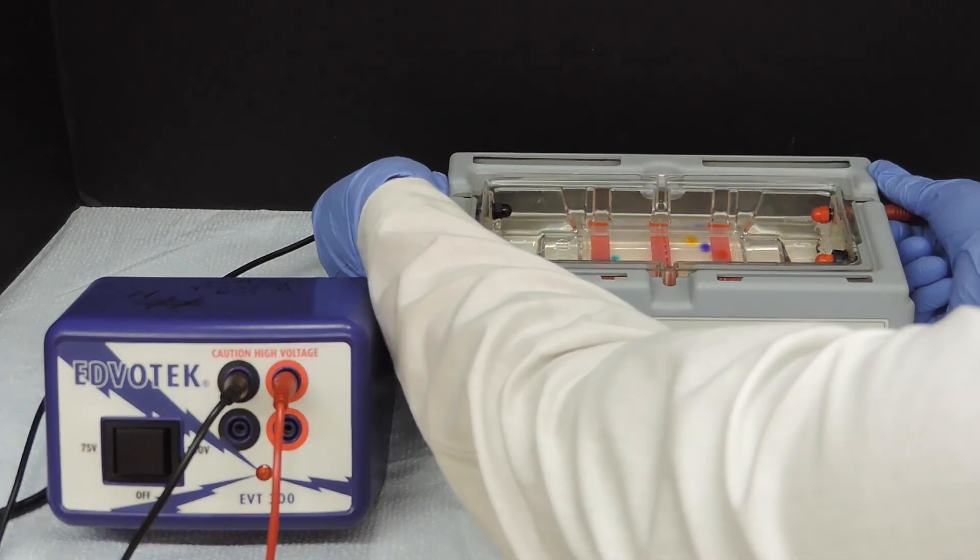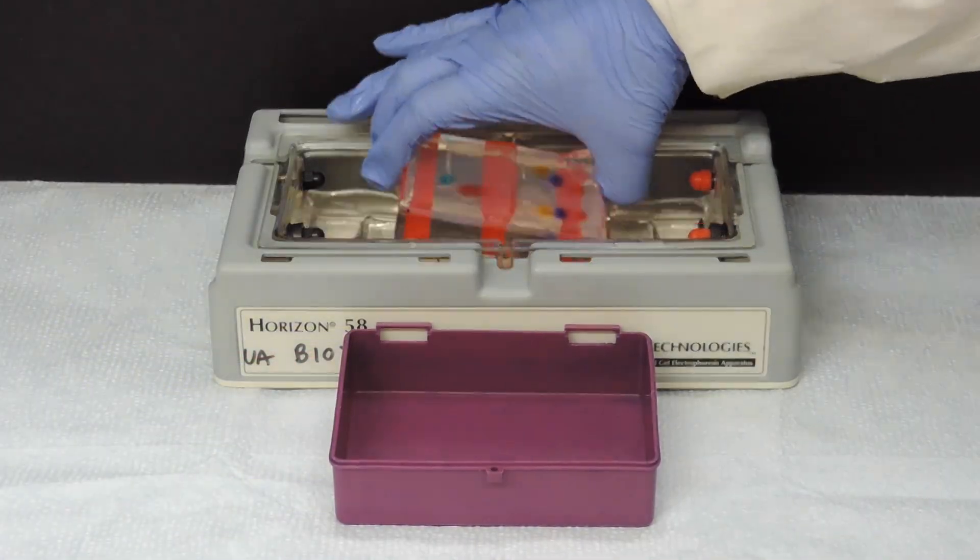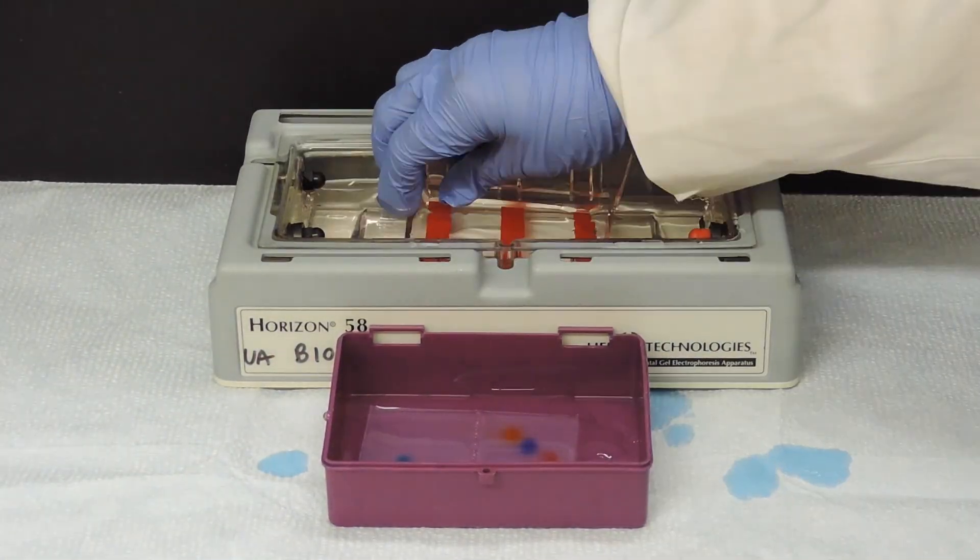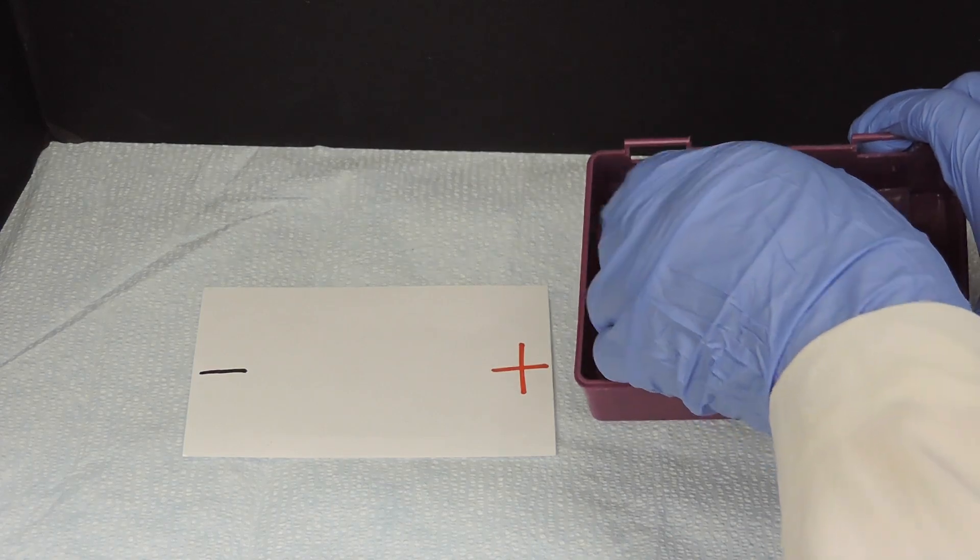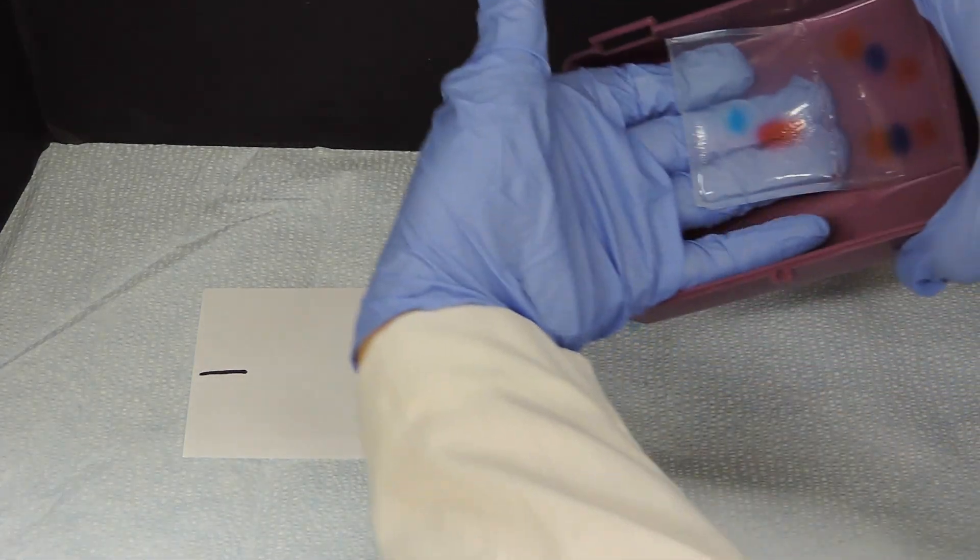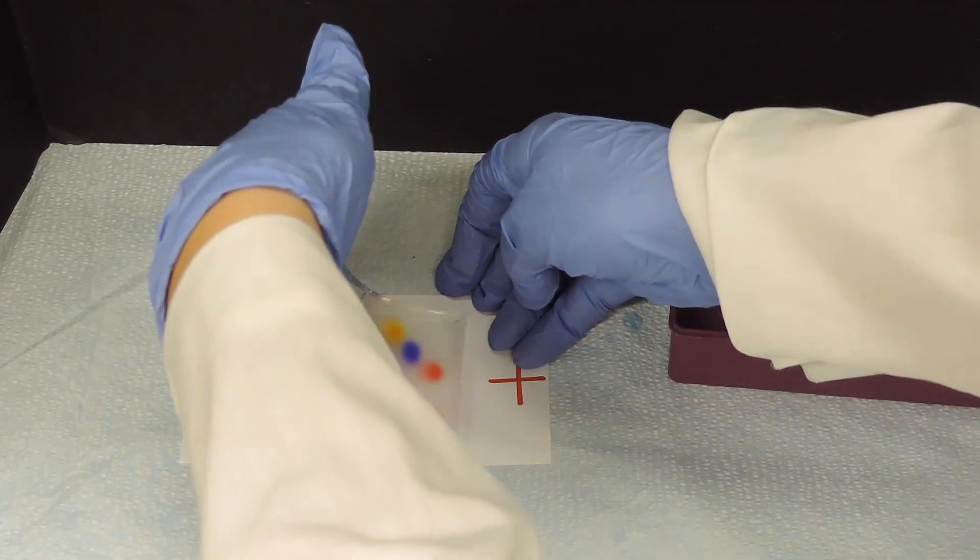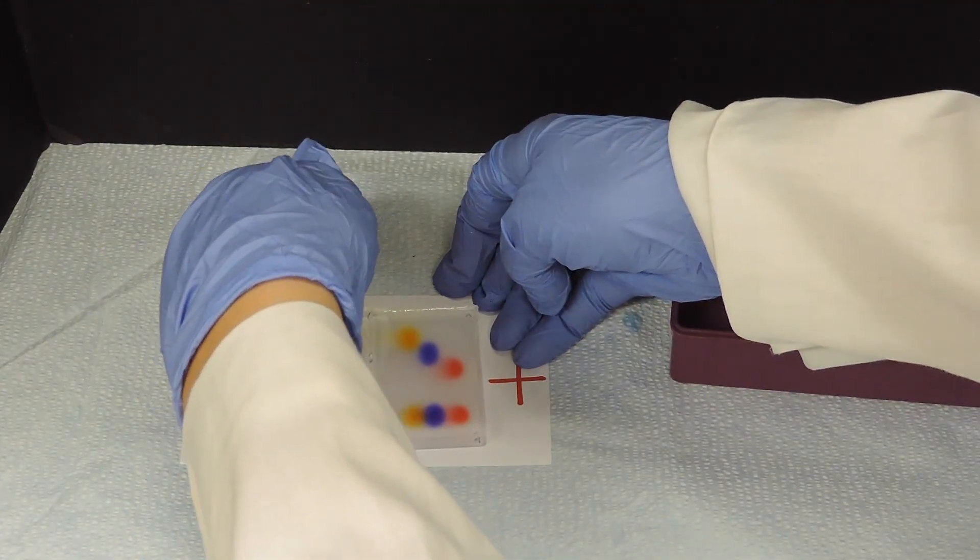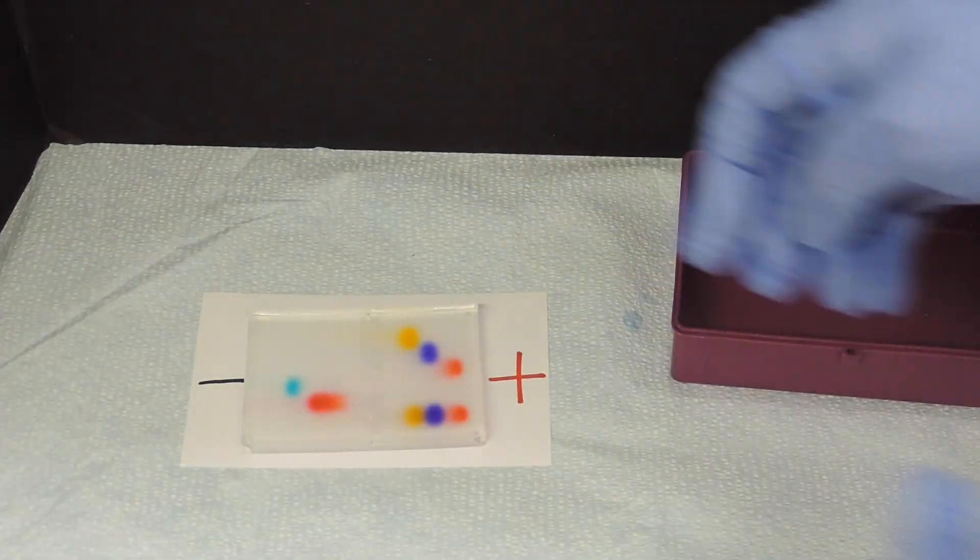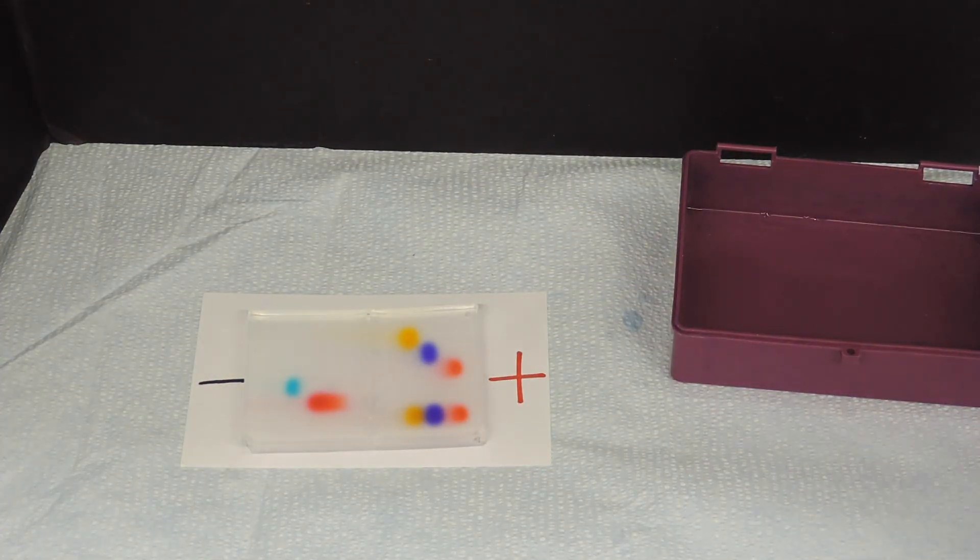Unplug the electrophoresis box. Carefully remove the gel. Be sure to note which side is positive and which side is negative. Notice which bands move towards the positive electrode. These would be negatively charged. And which bands move towards the negative electrode. These would be positively charged.